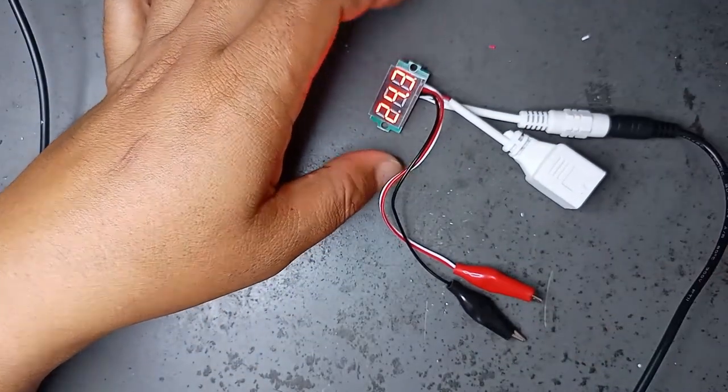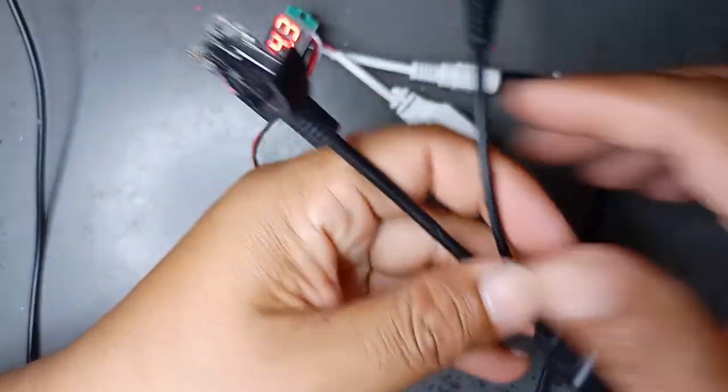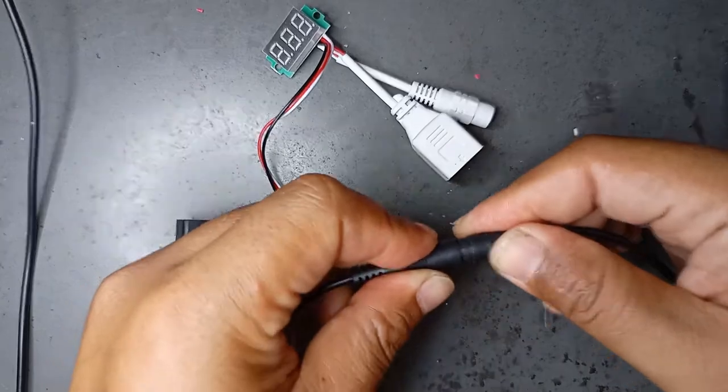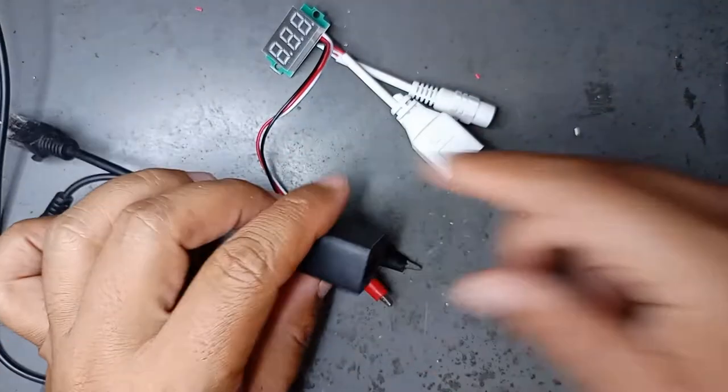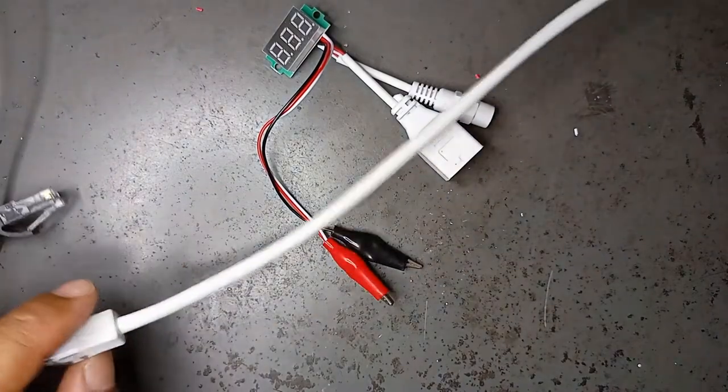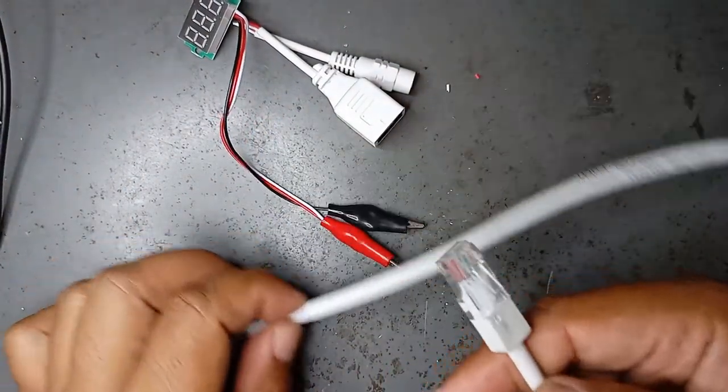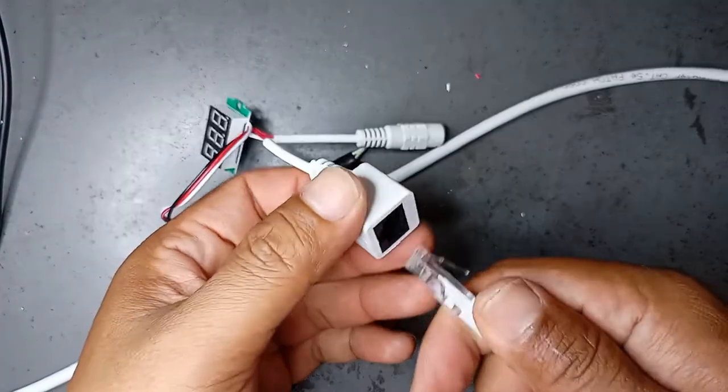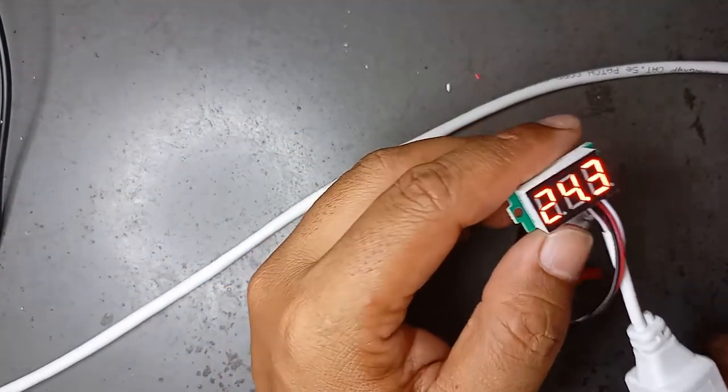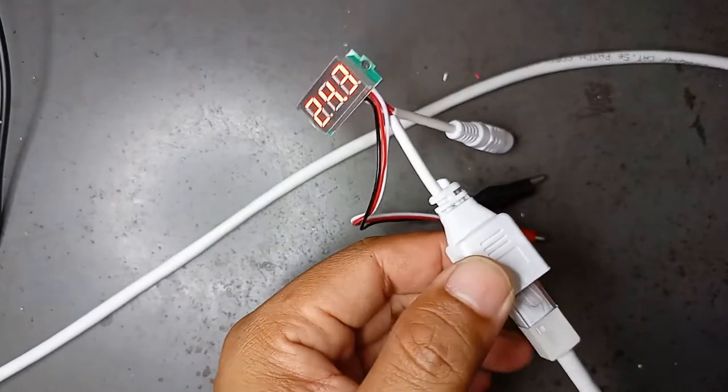Now let's test using PoE. This is PoE. We plug it into the power jack here. Then we use a cable, a short cable for testing. One end goes here, the other end we plug in here. It lights up too! The measurement is 24.3V, same reading.